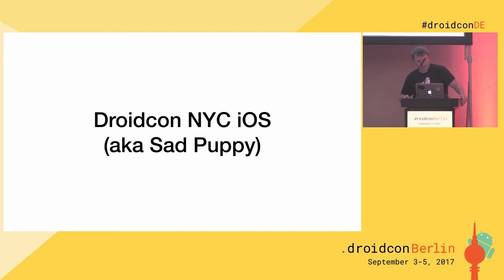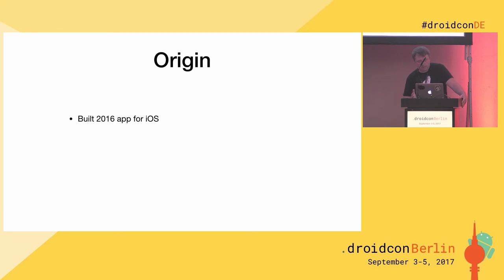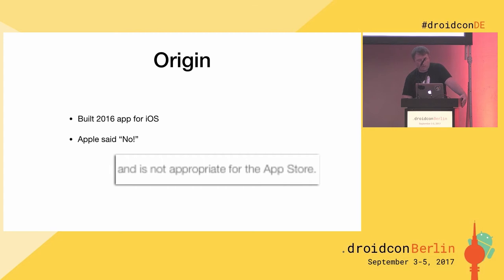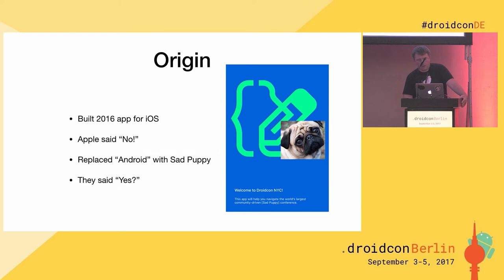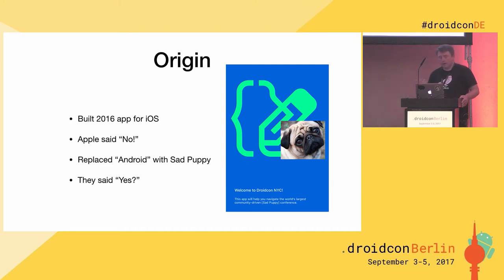DroidCon NYC iOS app — aka the sad puppy. We built this for 2016 DroidCon, we published it, and Apple said no. Apple said it was not appropriate for the App Store because it said Android and had a little Android guy. So I made a quick joke and covered the Android guy, then replaced Android with 'sad puppy' throughout the app — and they said yes. So that exists. It's not actually a puppy, it's a full-grown dog, so the joke doesn't even really make sense.